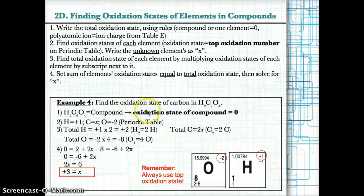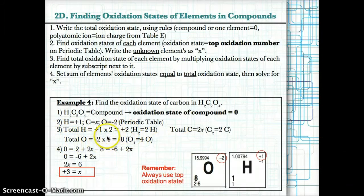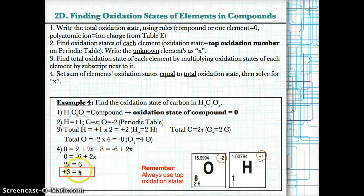Example four: find the oxidation state of carbon in H2C2O4. This is a compound, so its total oxidation state is zero. H's oxidation state is +1, C's is X (unknown), and O's is -2. H's total: +1 times 2 = +2. C's total: X times 2 = 2X. O's total: -2 times 4 = -8. Setting up: 0 = 2 + 2X + (-8), so 2X = 6, and X = +3. The oxidation state of carbon in H2C2O4 is +3.